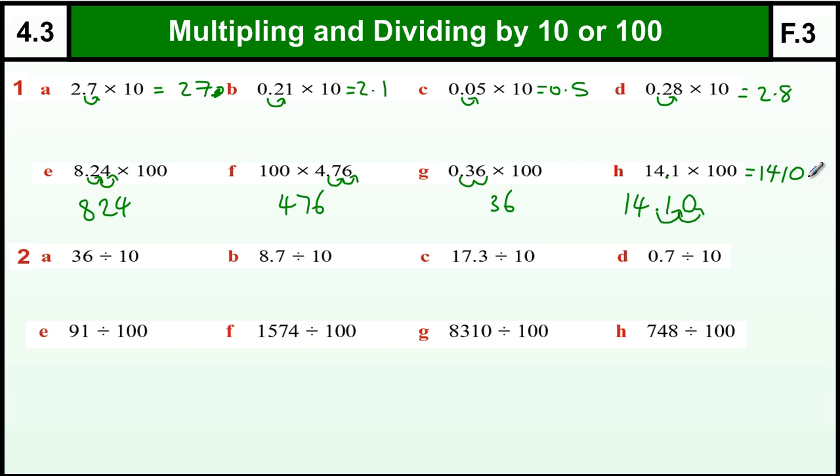Now dividing by 10 and dividing by 100 are very similar. Just we're making a number smaller by moving the decimal point. Now 36 doesn't have a decimal point, but if I write it where it should be, so 36.0, and then divided by 10, the decimal point jumps one place to the left. We get 3.6.